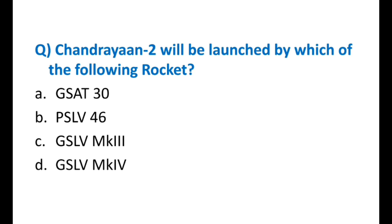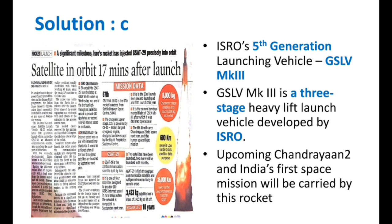Chandrayaan-2 will be launched by which rocket? Options — GSAT-30, PSLV-46, GSLV Mark 3, or GSLV Mark 4. The answer is C — GSLV Mark 3, a very important rocket to remember from science and technology. ISRO's fifth-generation launch vehicle is the GSLV Mark 3. Yesterday we discussed communication satellite GSAT-29, also launched by GSLV Mark 3. It is a three-stage heavy-lift launch vehicle developed by ISRO. The upcoming Chandrayaan-2 and India's first human space mission will also be carried out by GSLV Mark 3.